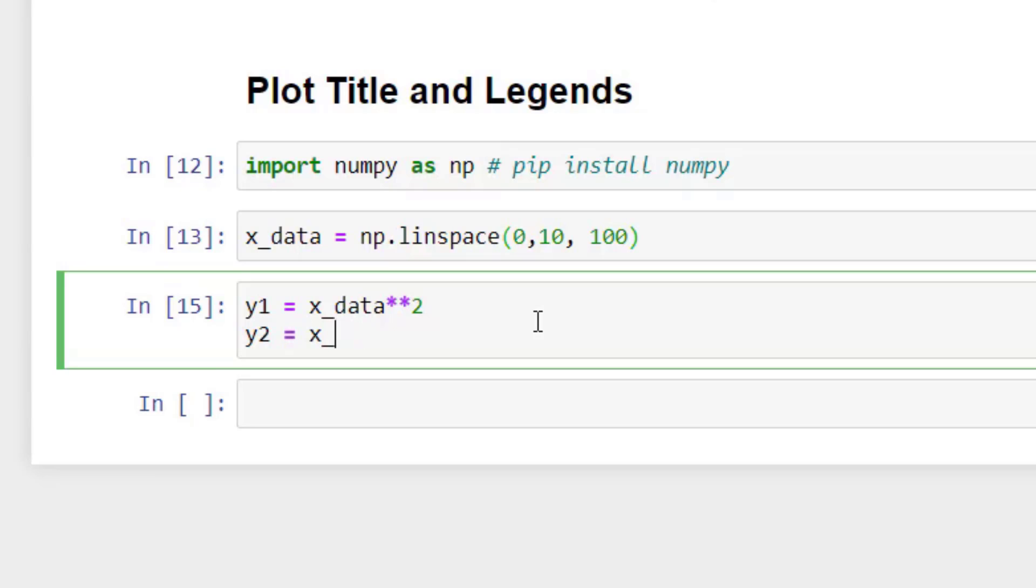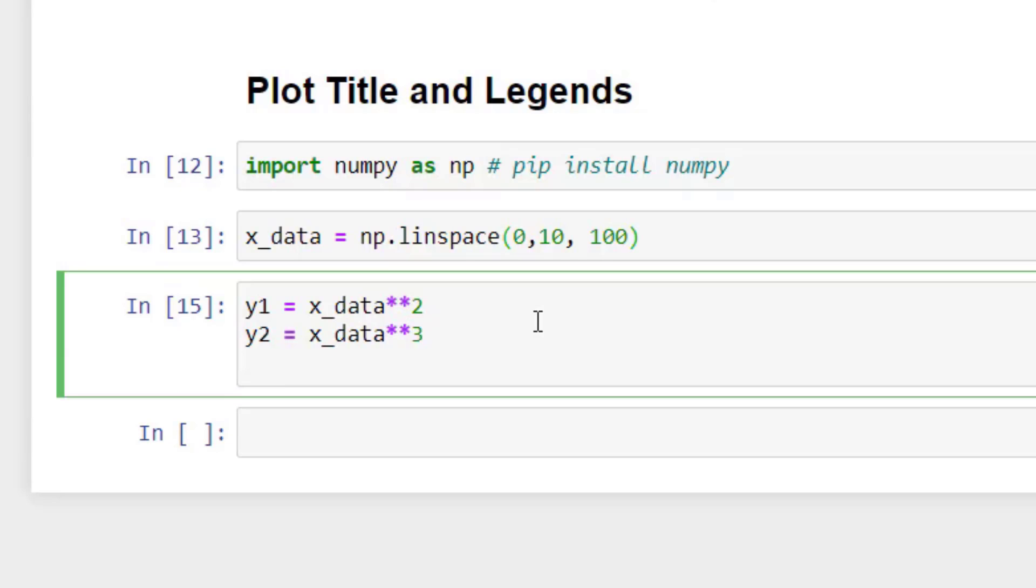So the first data is this one. Second I want to generate cube of this one. So x data power 3 and the third one, let's say, x data and what should I do? Let's multiply with 2.5. Just random plot I wanted to generate using all this data. So we'll run this.